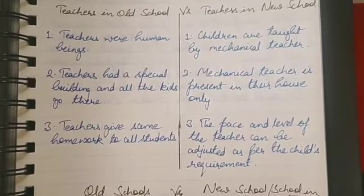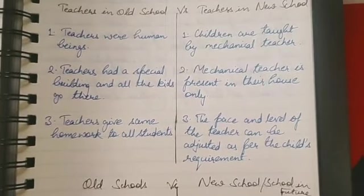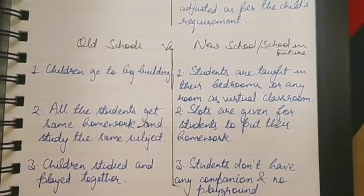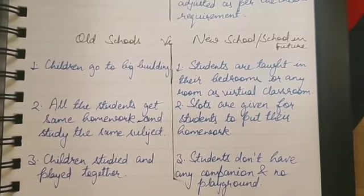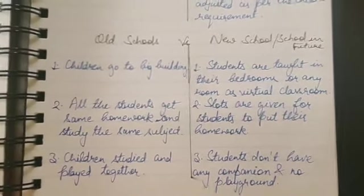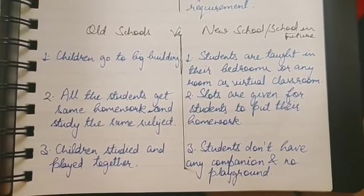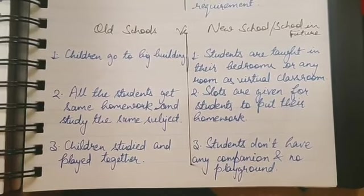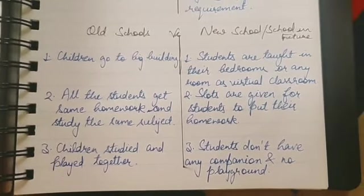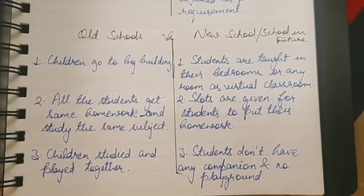Now we are going to see the difference between old schools and new schools. The first difference is that in old schools, children go to big buildings — a special building where teachers and students all used to go. Whereas in the school of the future, students are taught in their bedrooms or any room as virtual classrooms, set up within their own house.